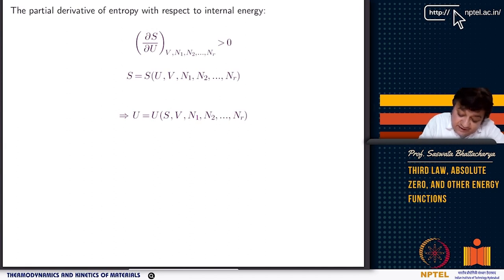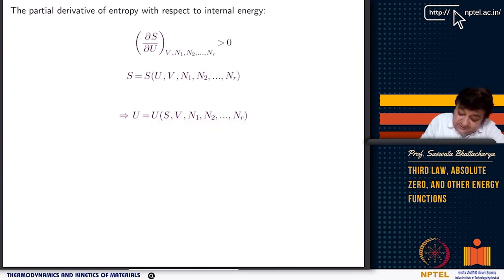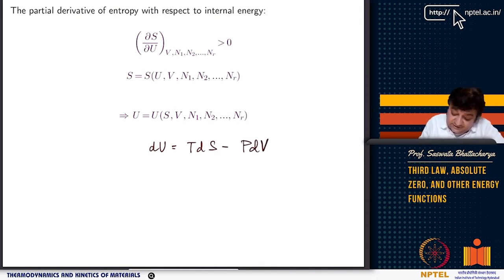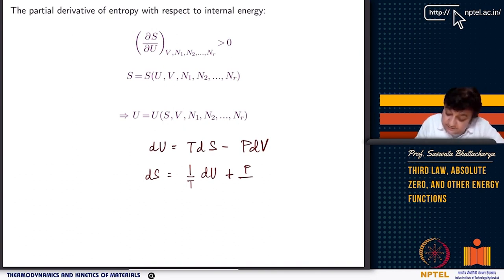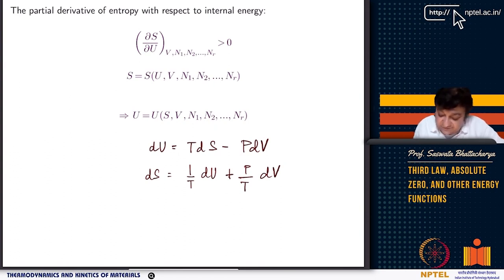Since S is continuous and monotonically increasing in energy, if I know S as a function of u, v, and n, I can also define u as a function of S, v, and n. For example, from du = T dS − P dV, we could express dS as (1/T) du + (P/T) dV. Both representations are possible: you can write u as a function of S and V, and S as a function of u and V, because S is a continuous and differentiable function of energy.